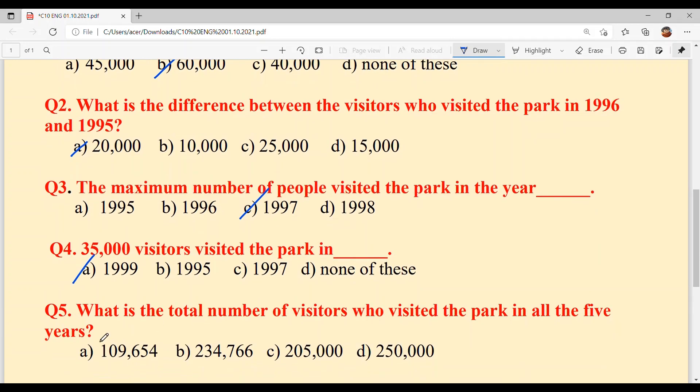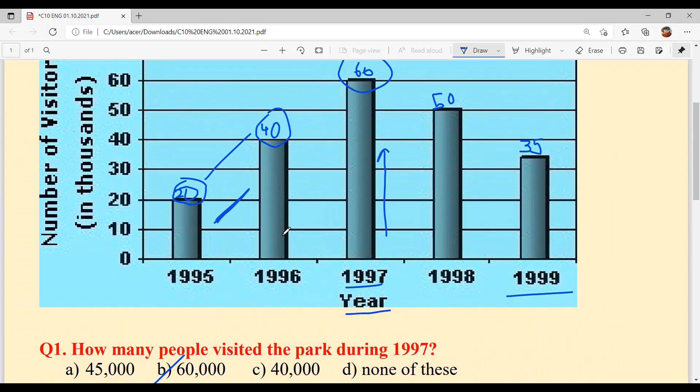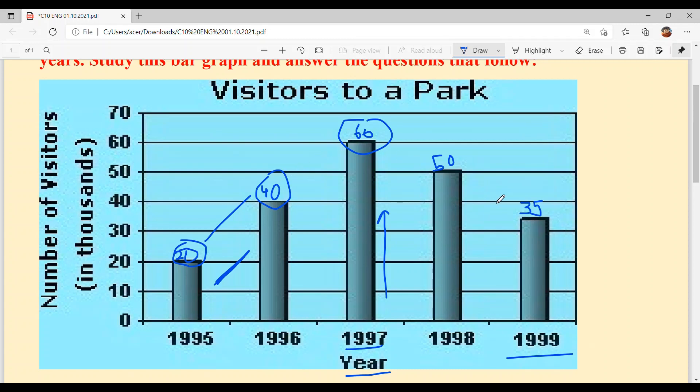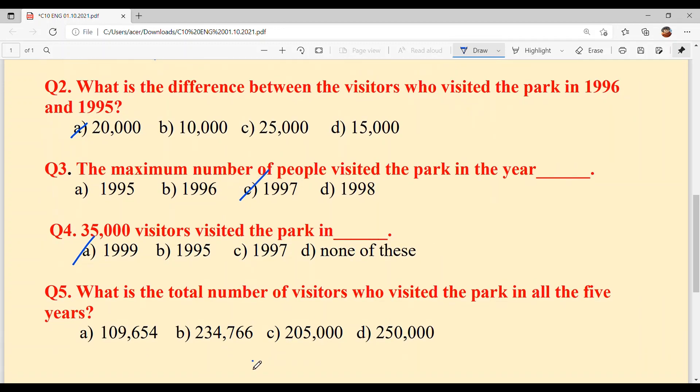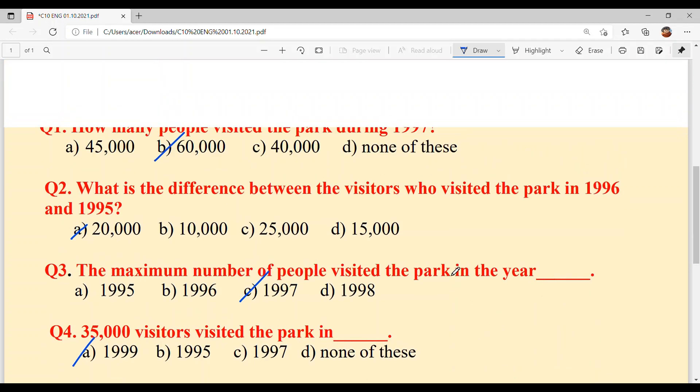And last, Question 5: What is the total number of visitors who visited the park in all the five years? What's the total in these five years? Easy. We add all of them. 20,000 plus 40,000 plus 60,000 plus 50,000 plus 35,000 equals 205,000. Option C is your answer.